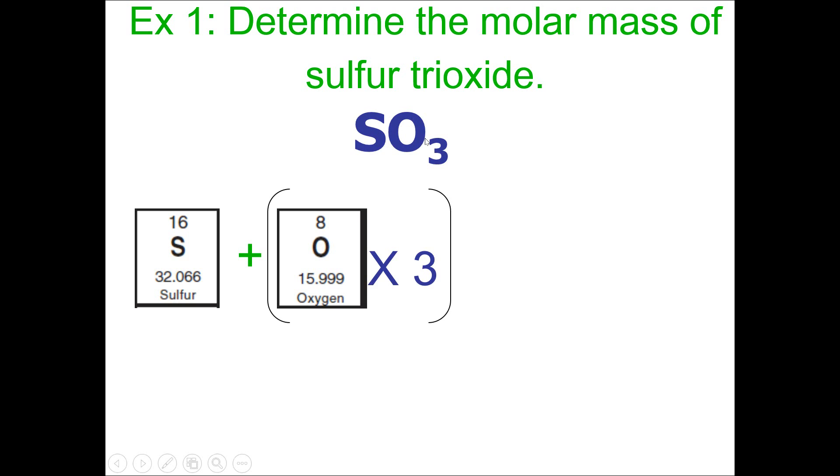Now, there are three oxygens in the formula, and that's why we're multiplying oxygen's mass times three. You're basically adding up all the element masses that are present in the formula.